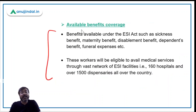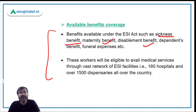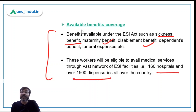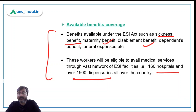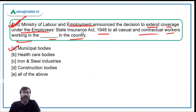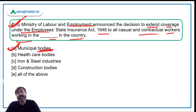The benefits that will be provided include sickness benefits, maternity benefit, disablement benefit, dependence benefit, and funeral expenses. Workers can avail these facilities across 160 hospitals and over 1500 dispensaries recognized by ESIC across the country. Therefore, the correct answer is option A — municipal bodies — as casual and contractual workers in municipal bodies will now be covered under the ESIC Act of 1948.